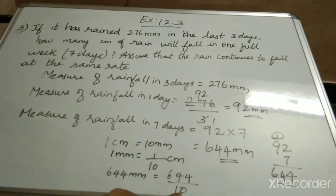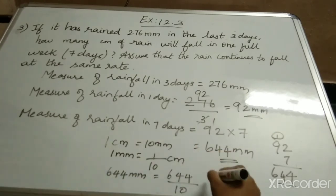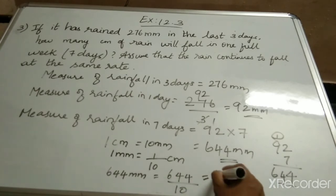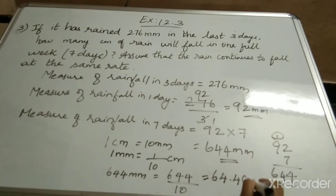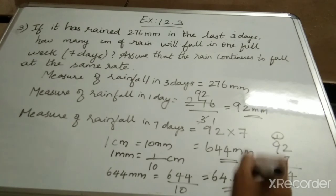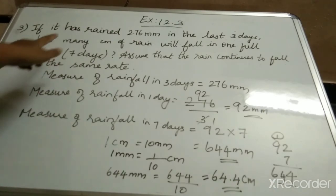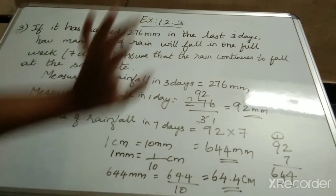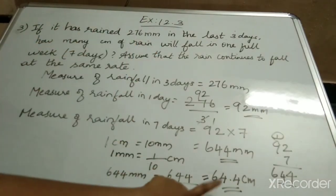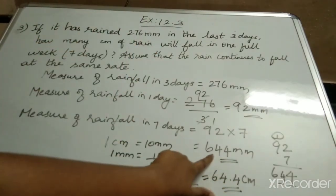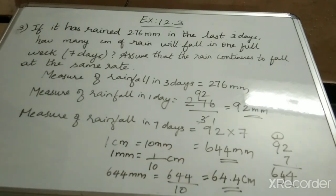How many zeros are there in the denominator? One zero. So in our answer we have to place the decimal before one digit from the right. So 64.4 cm. Since it is given how many cm of rain will fall, we are expressing this in the form of cm. Clear children?